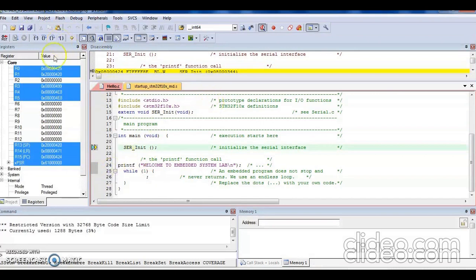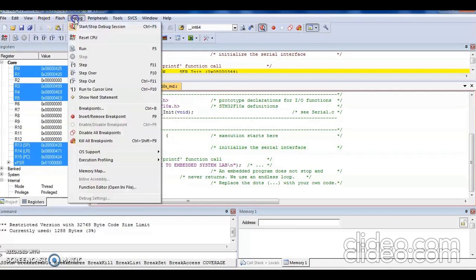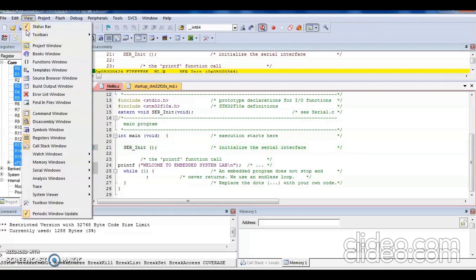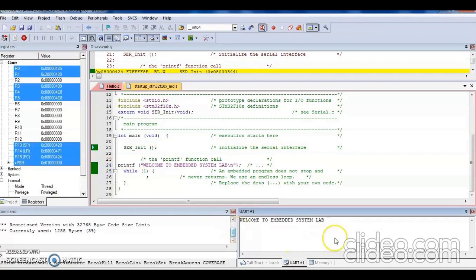Now let me run the code. Go to Debug, Run, or directly you can press F5. Next I will now check my serial window for the UART for the particular message. In similar fashion, you can try out different data to be transmitted.